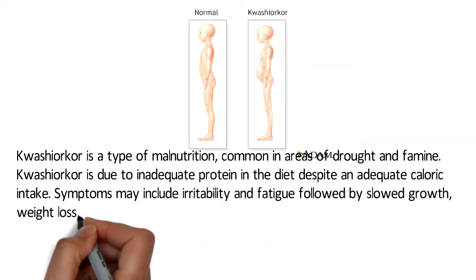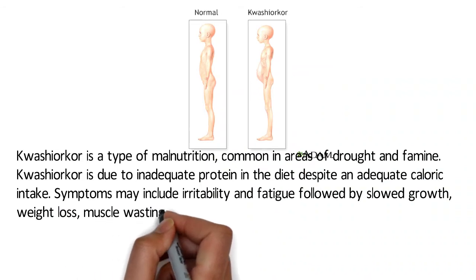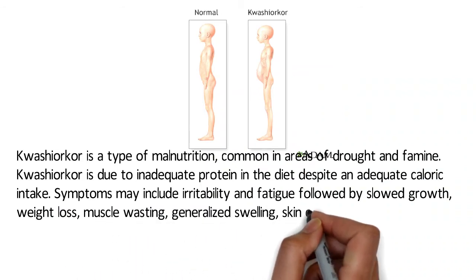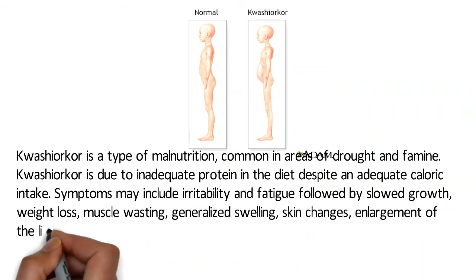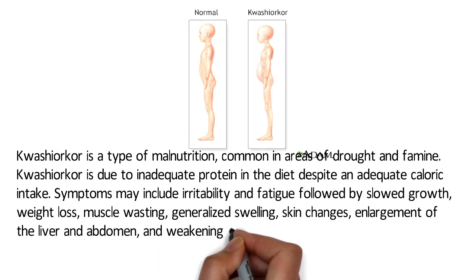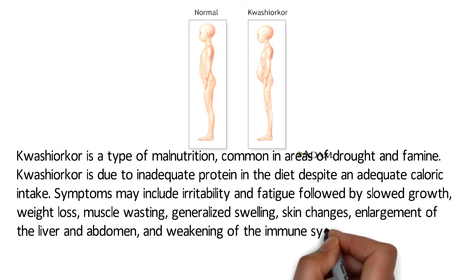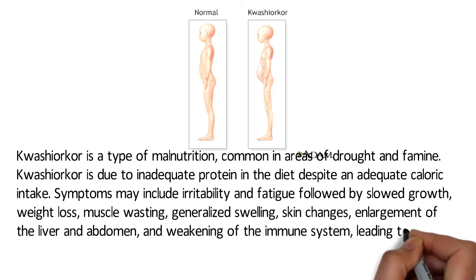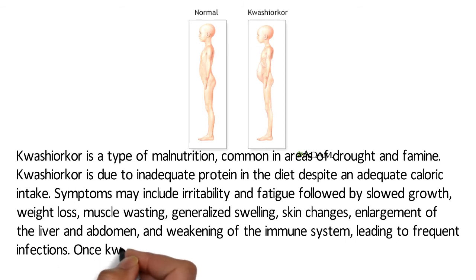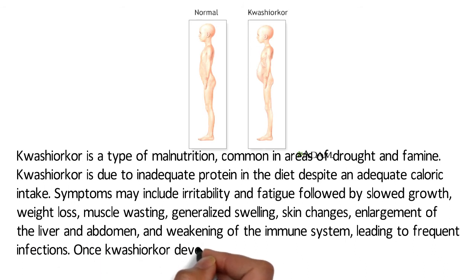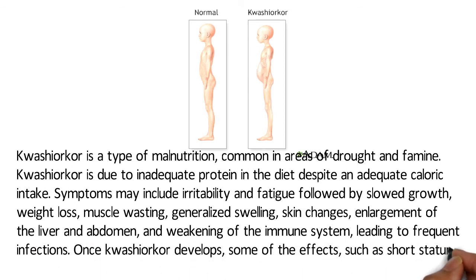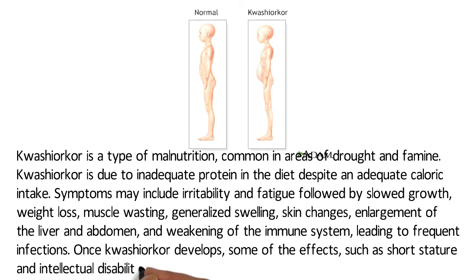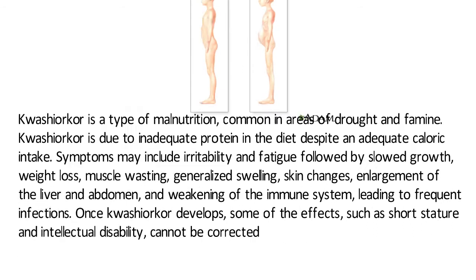Symptoms may include irritability and fatigue, followed by slowed growth, weight loss, muscle wasting, generalized swelling, skin changes, enlargement of the liver and abdomen, and weakening of the immune system leading to frequent infections. Once kwashiorkor develops, some effects such as short stature and intellectual disability cannot be corrected.